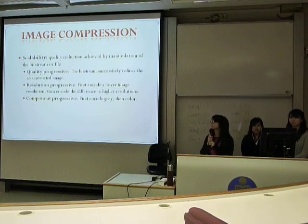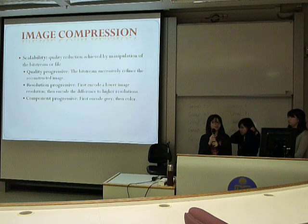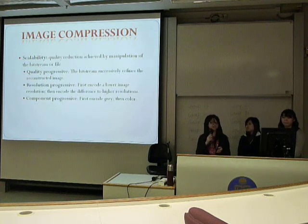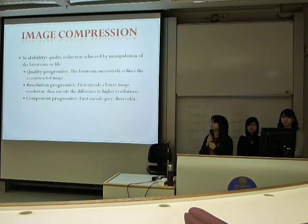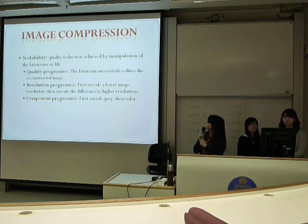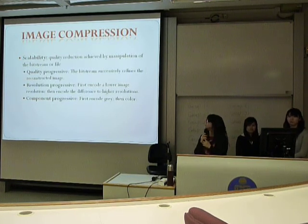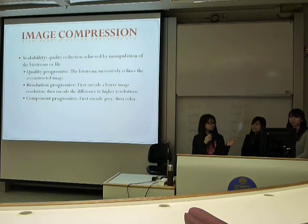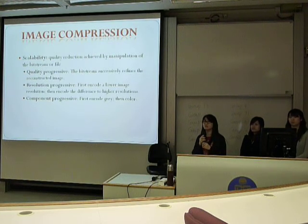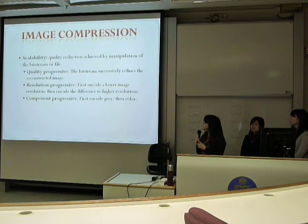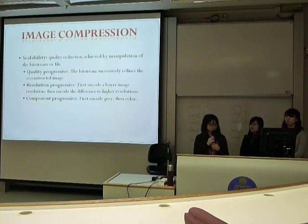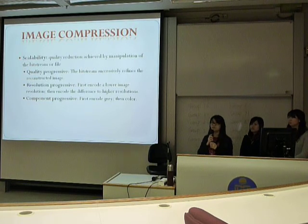For image compression, scalability is very important. Scalability is essentially the quality reduction achieved by manipulation of the bitstream of the file. There are three different progressions. For quality progressive, the bitstream successively refines the reconstructed image. For resolution progressive, encoding is first done on a lower image resolution, then compared with the higher resolution one, and the difference is encoded. Lastly, for component progressive, compression is done first on the gray channel and then the colors.